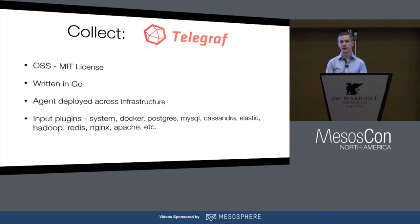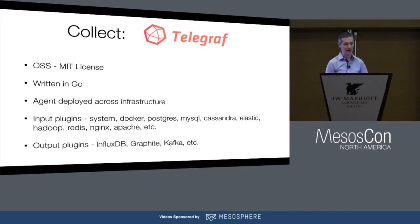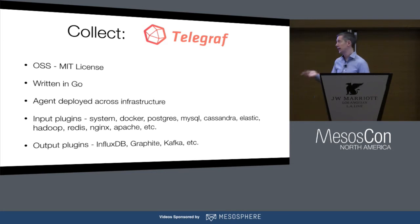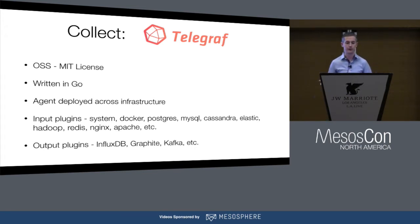For instance, we have a bunch of plugins for collecting stuff on Windows boxes, and I don't think a single developer in our company has a Windows box, so we didn't write any of those. And then there are output plugins — we wanted Telegraf to be useful as an agent whether or not you were running other parts of our stack, so you can output the data to InfluxDB, Graphite, Kafka, and SignalFX also has an output plugin for Telegraf.